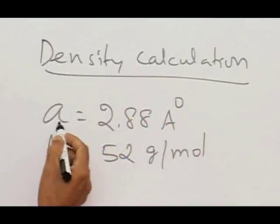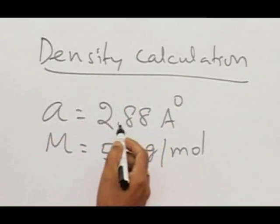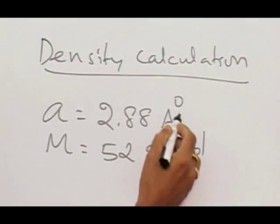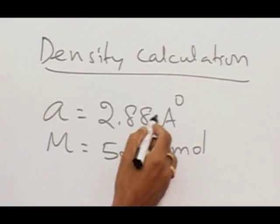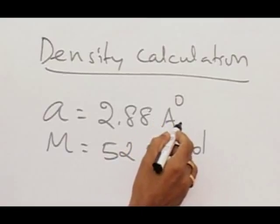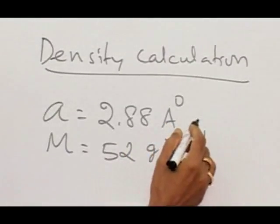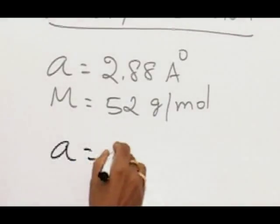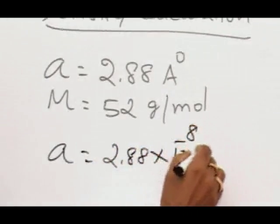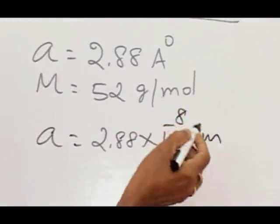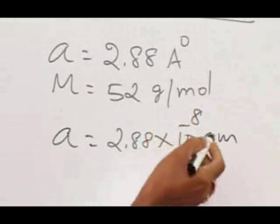As per the problem, the edge length A equals 2.88 angstrom units. You must be very careful - we should not solve the problem with angstrom units. That must be converted to centimeters: A equals 2.88 × 10^-8 cm, because we are going to express the density in grams per cubic centimeter.